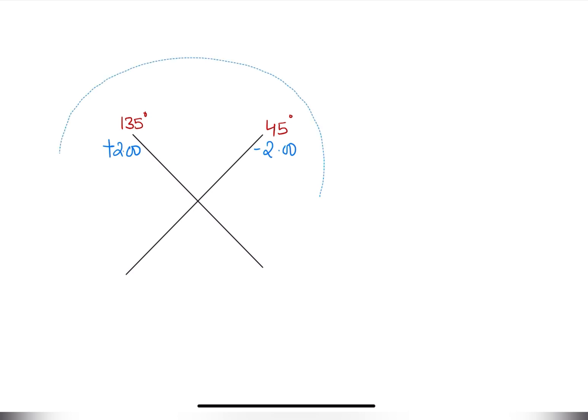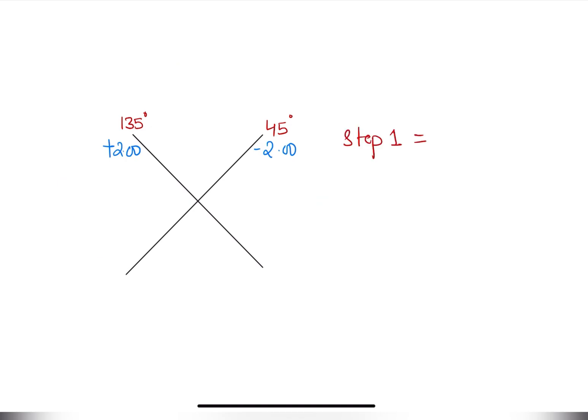Now let's take one more example. Here is our optical cross form and we want to convert it into the sphero-cylindrical form. Step one: we're going to take either one of the two principal meridians as the spherical value.